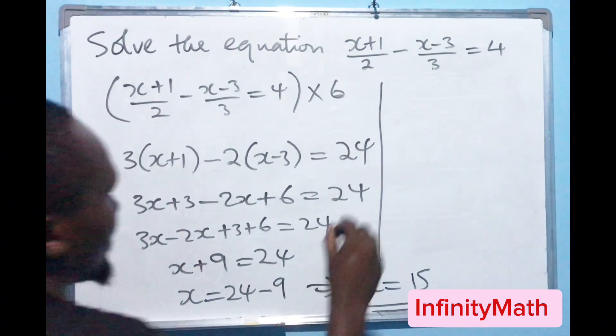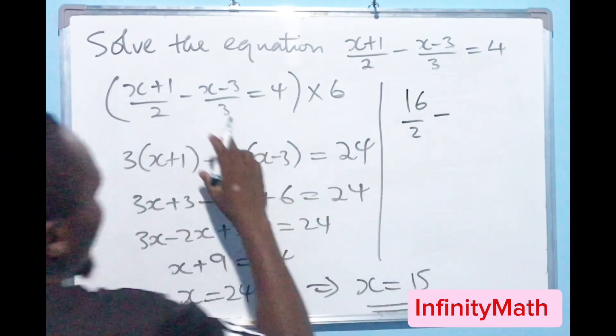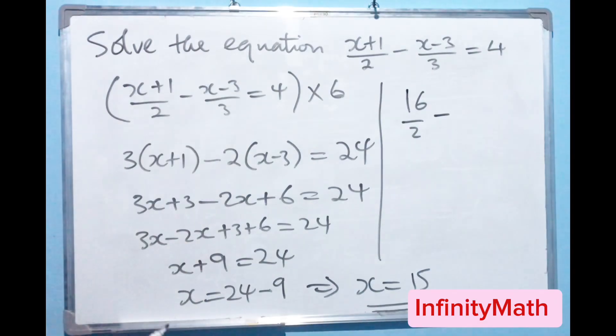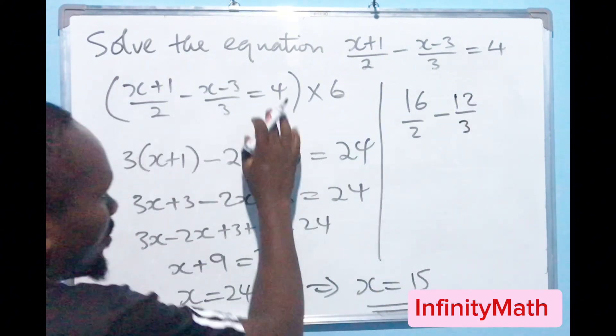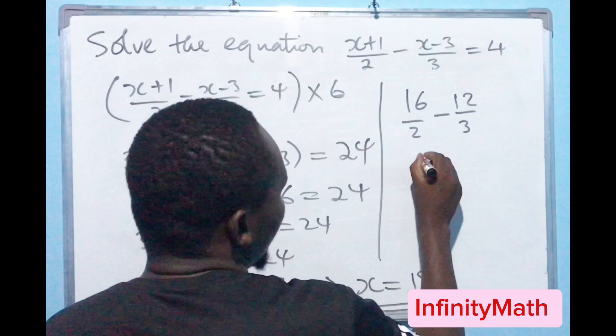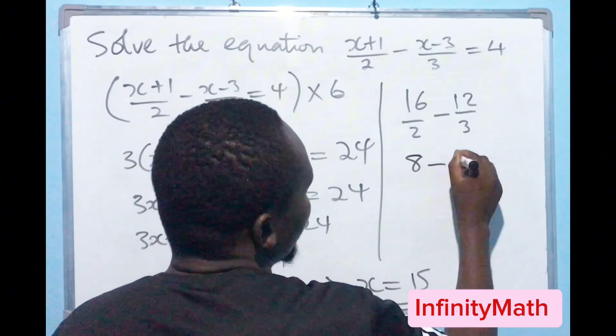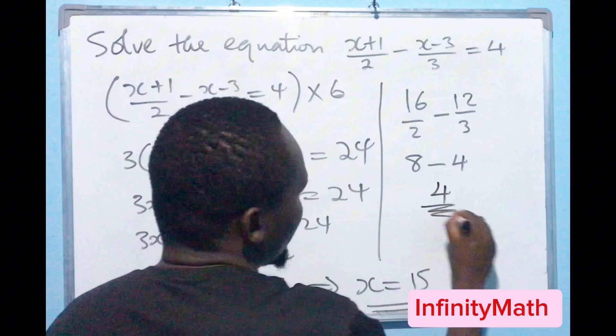So let's try to prove it. If I put 15 here, it's going to be 16. So that should be 16 over 2 minus, if I put 15 there, it's going to be 15 minus 3. That would be 12. So I have 12 over 3. The answer should be 4 because that's what it is actually equated to. So here I'll get 8 minus here I'll get 4. So you can see that 8 minus 4 equals 4.